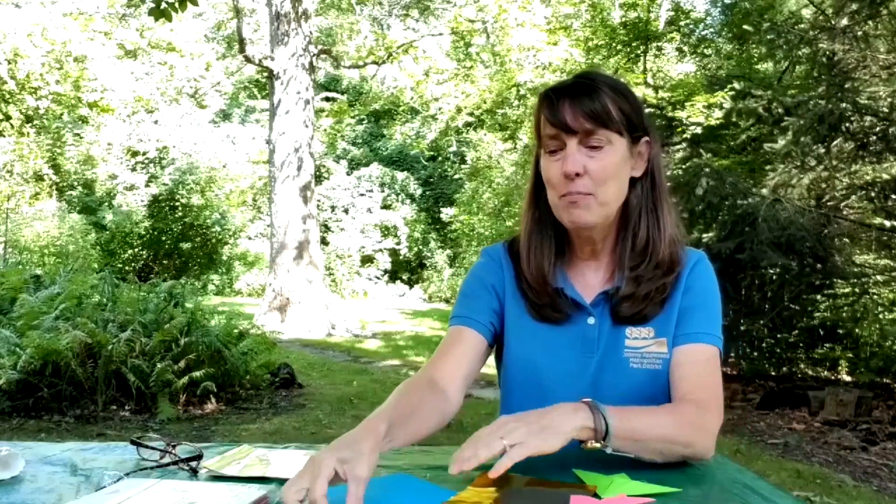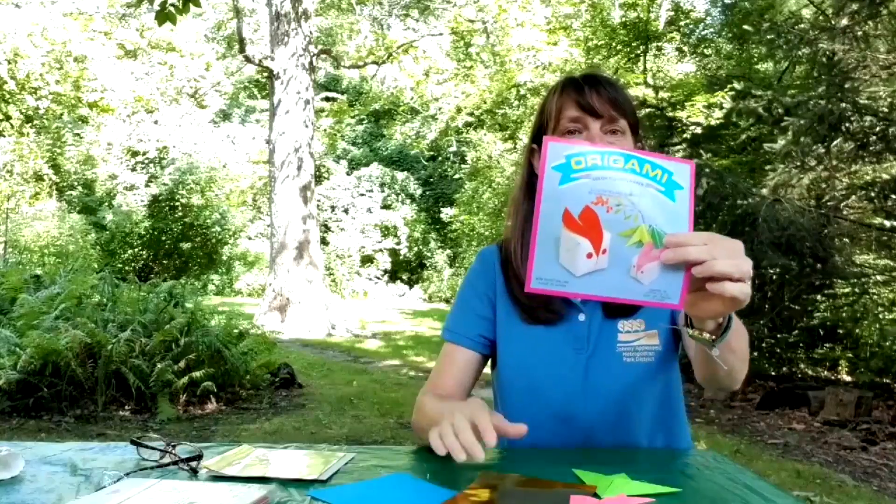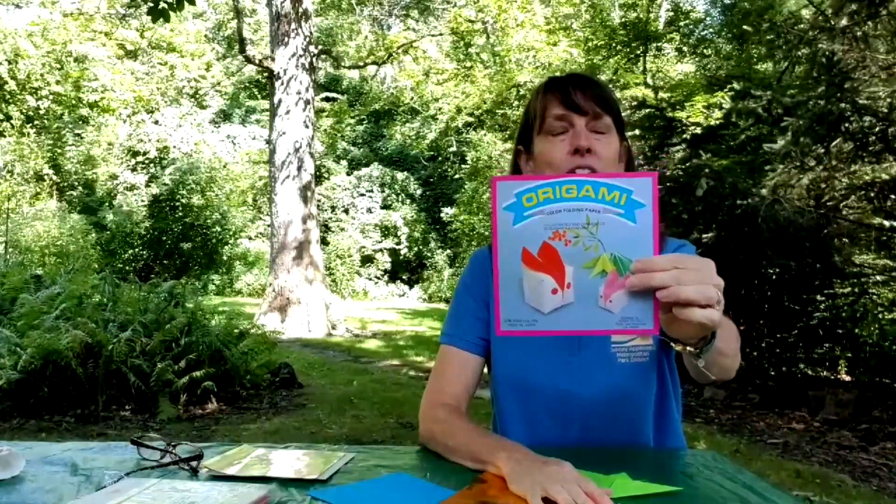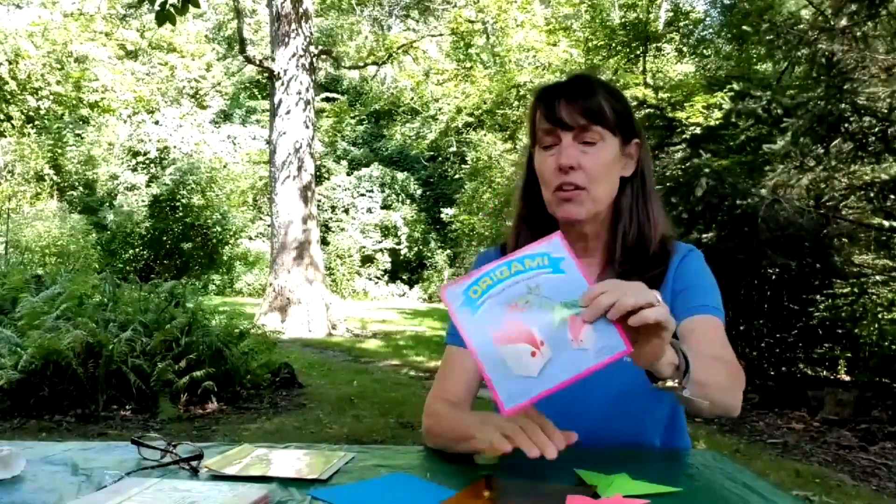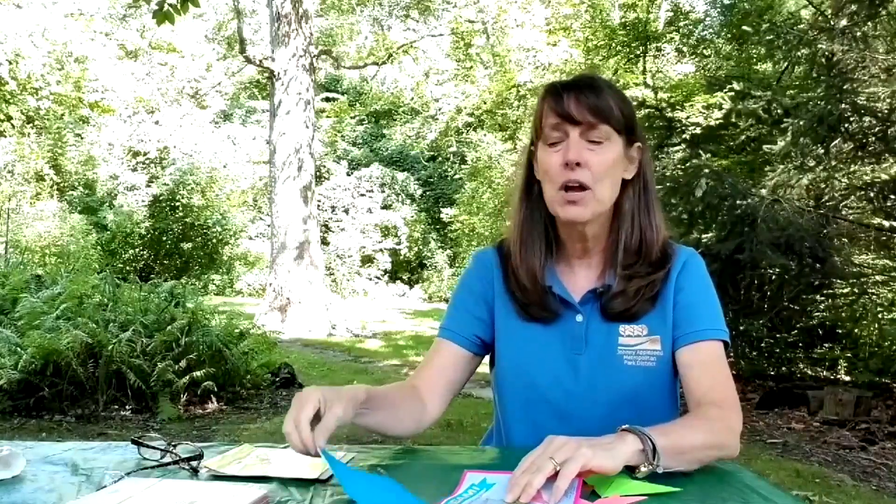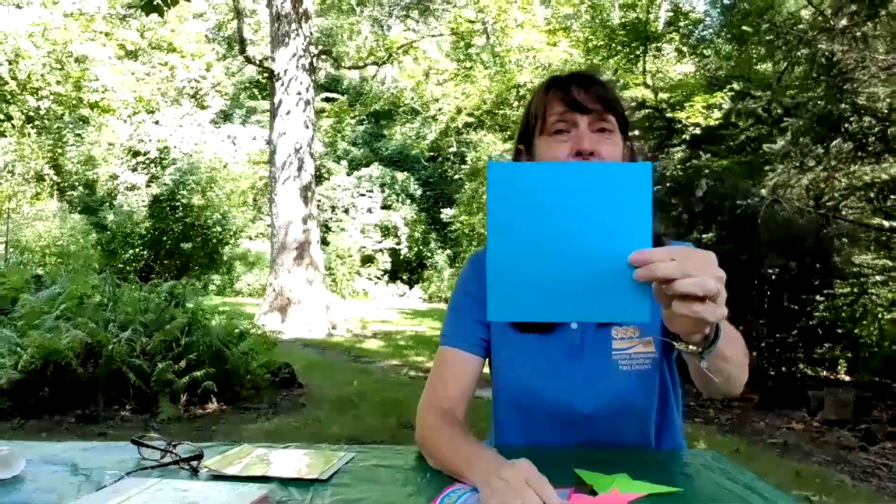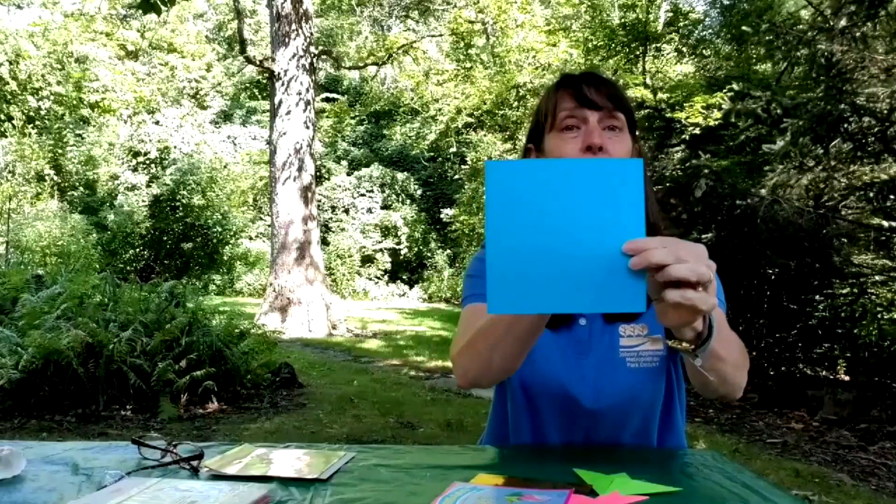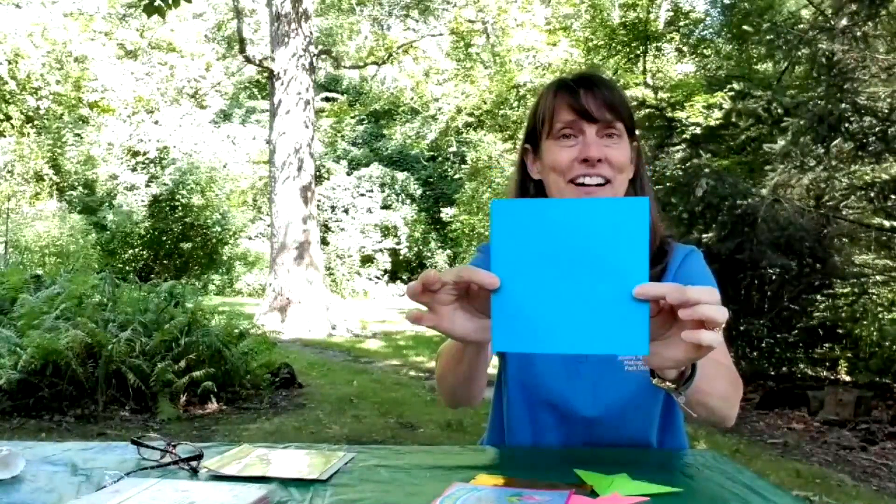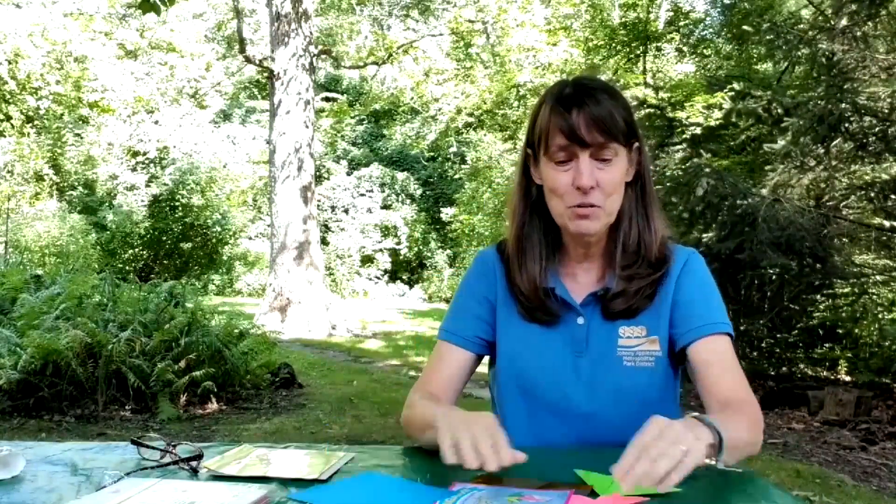For those of you that purchased the camp kits, I put into your camp kit three traditional origami papers. They're thinner than typical paper. But if you didn't get the kit, no problem. Just find some paper and cut it into a square. And that's what we're going to use.